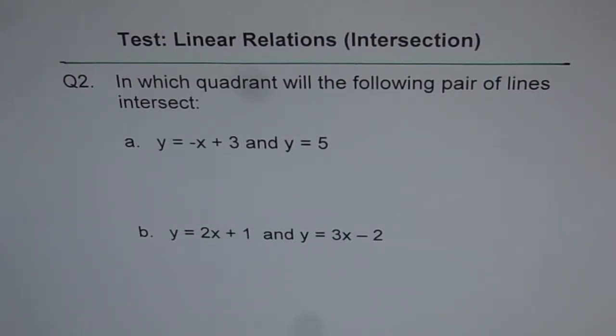Question number two is, in which quadrant will the following pair of lines intersect? And I would like you to answer this question even without sketching but giving a reason. So part A is y equals to minus x plus 3 and y equals to 5. So these are two lines which will intersect since their slopes are different. Now you have to find in which quadrant.